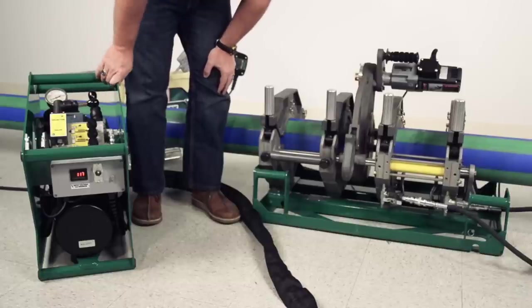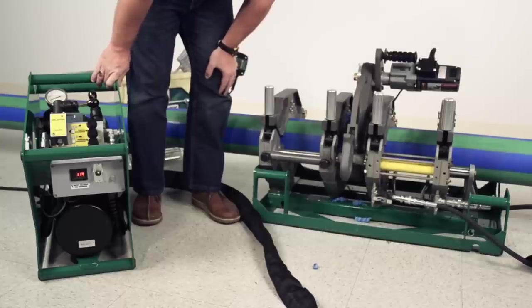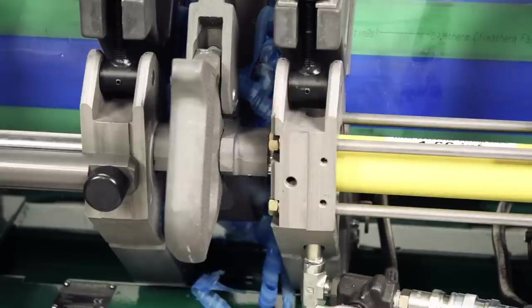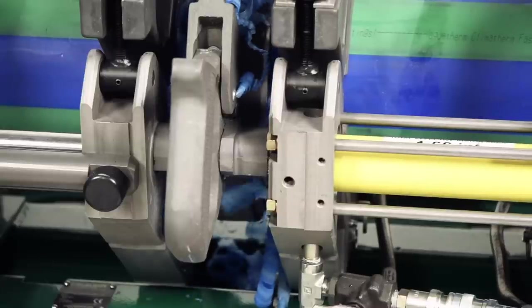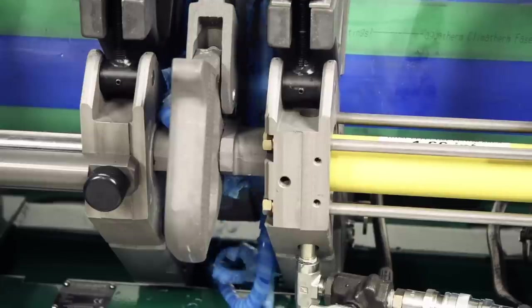Apply only enough pressure to allow the blades to shave ribbons of material from the pipe. If the facer begins to struggle, turn the pressure down. Face all the way to the mechanical stops, because this will square up the facer, ensuring the best possible face-off.